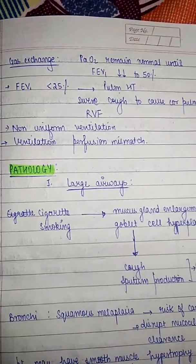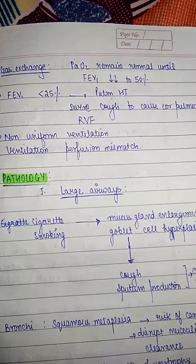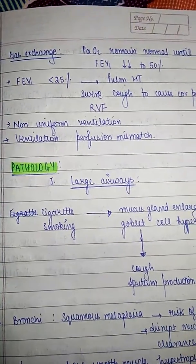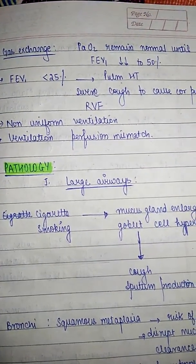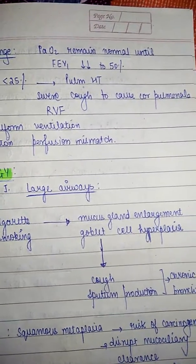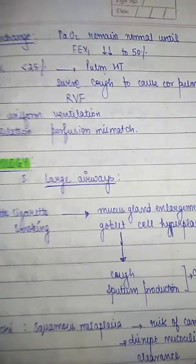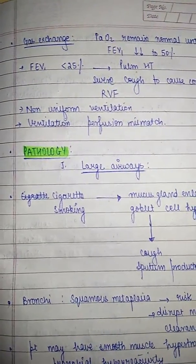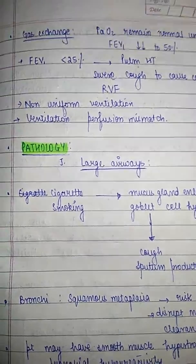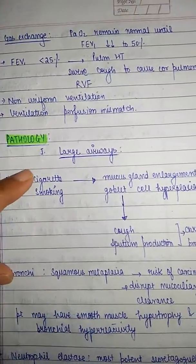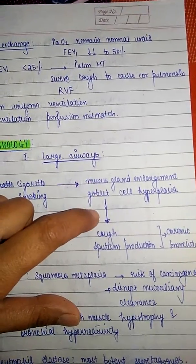Regarding gas exchange, PaO2 remains normal until FEV1 decreases to 50%. When FEV1 is less than 25%, pulmonary hypertension develops, and there is severe cor pulmonale — right ventricular failure. There will be non-uniform ventilation and ventilation-perfusion mismatch.